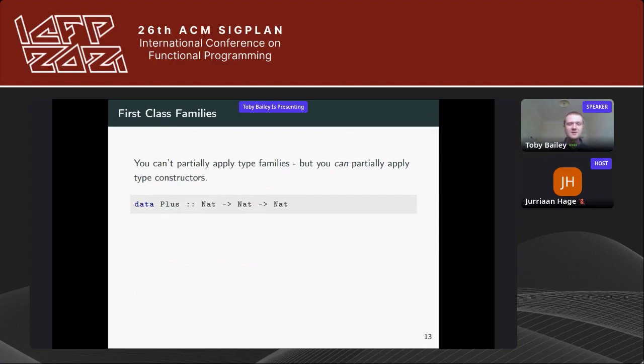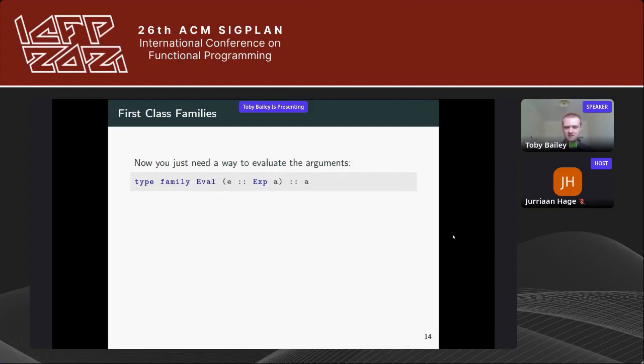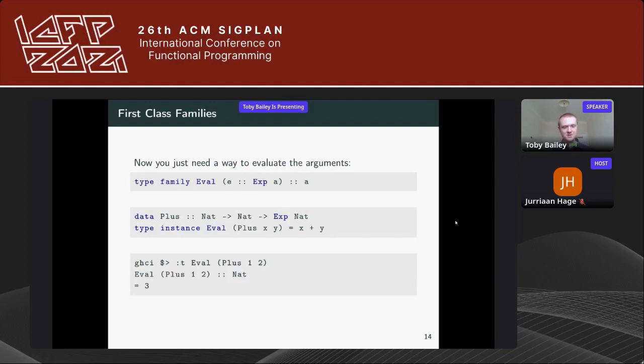You can't partially apply type families, but you can partially apply type constructors. To partially apply an addition function at the type level, you make a data type to hold the arguments, needing something of kind Star. You define a new type X from A to Star to hold all the arguments, then use an open type family called 'Eval' with an Eval instance for those arguments so you can partially apply them. To evaluate, you just call Eval on the argument list.